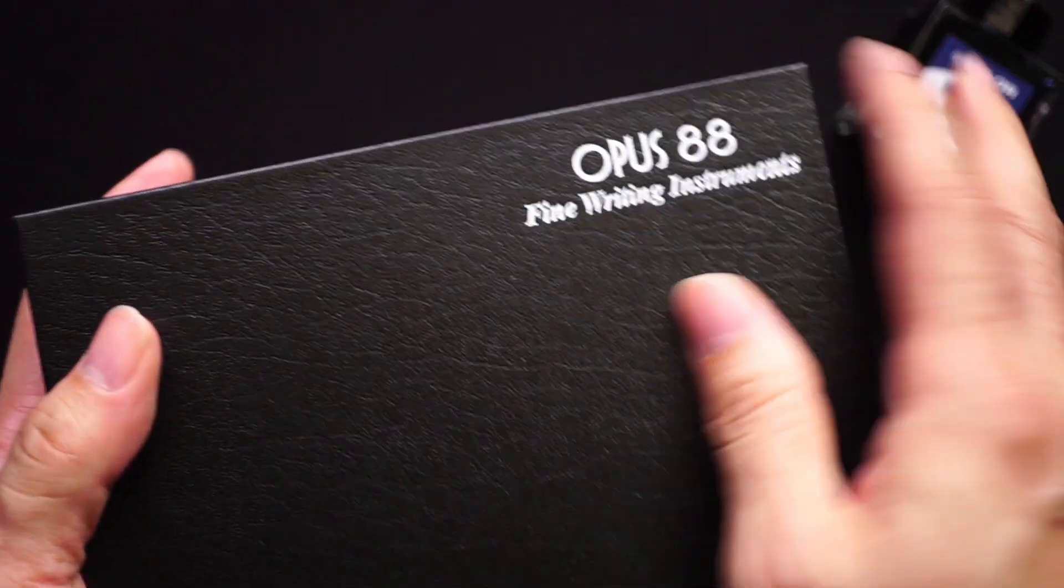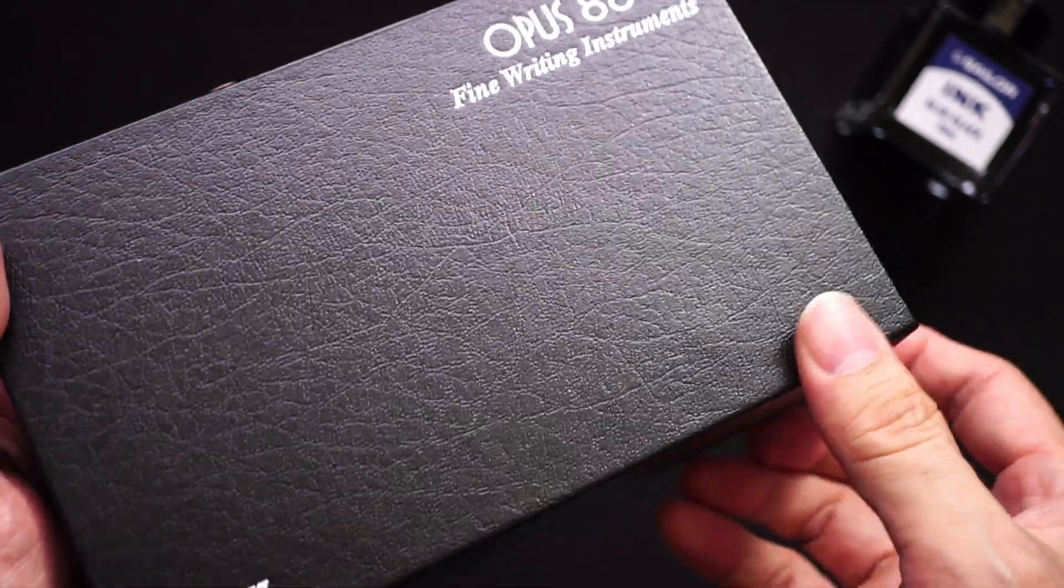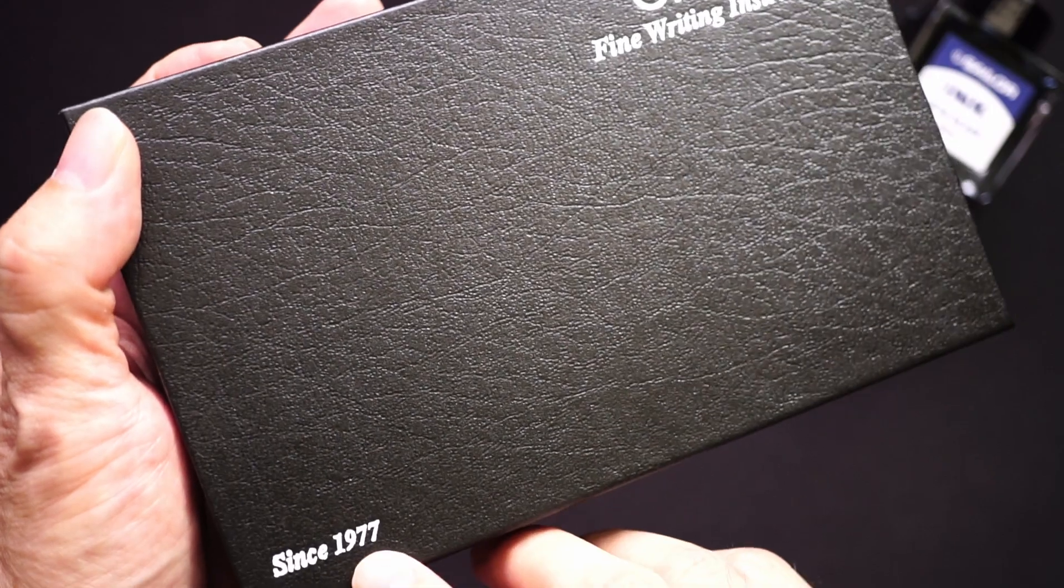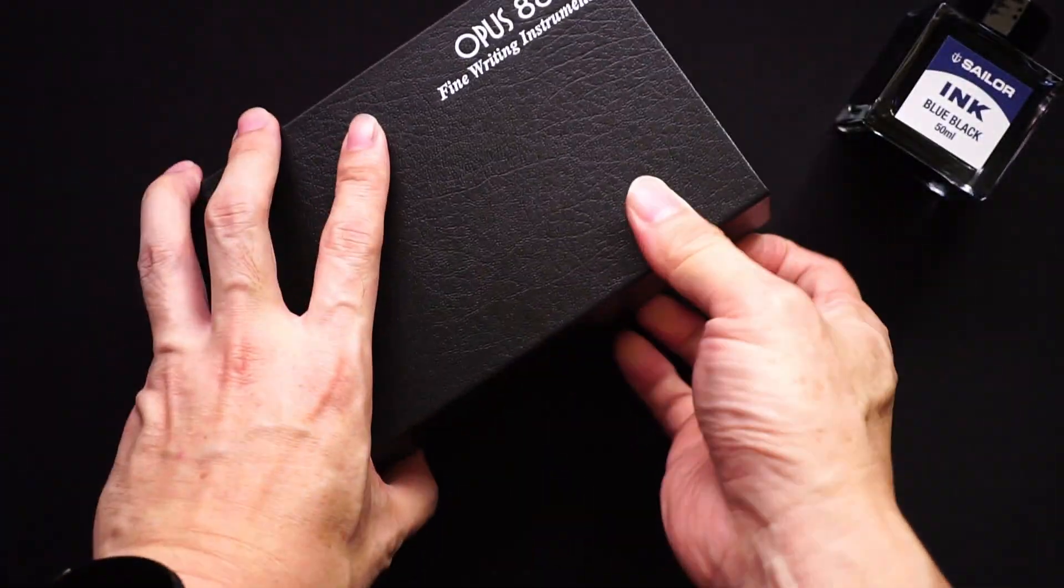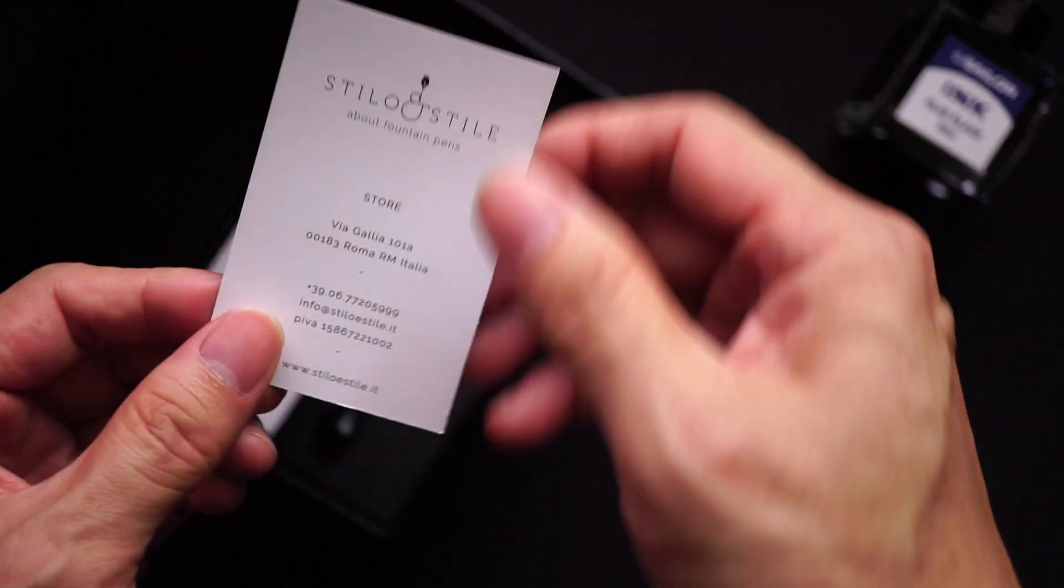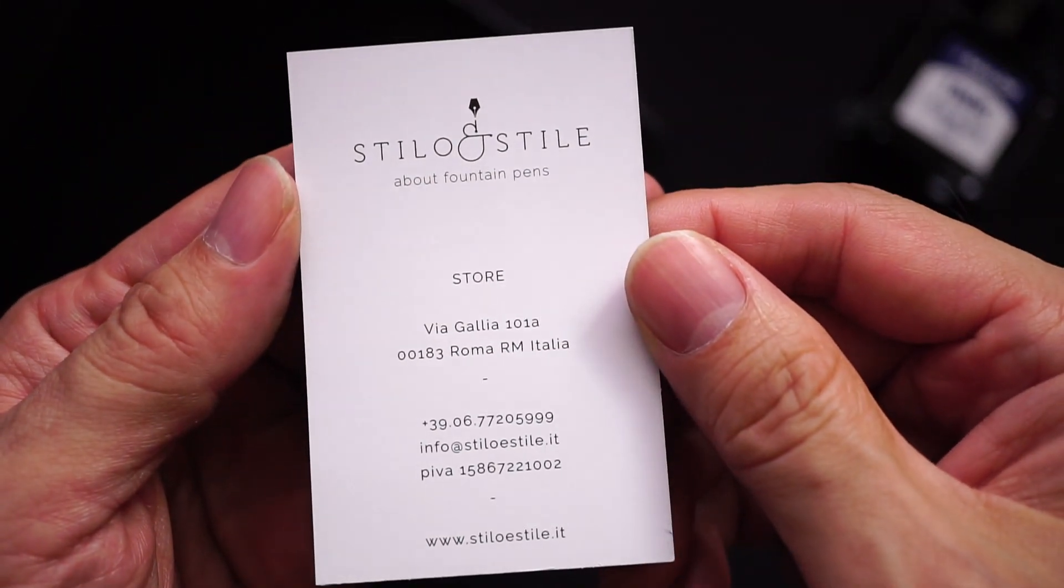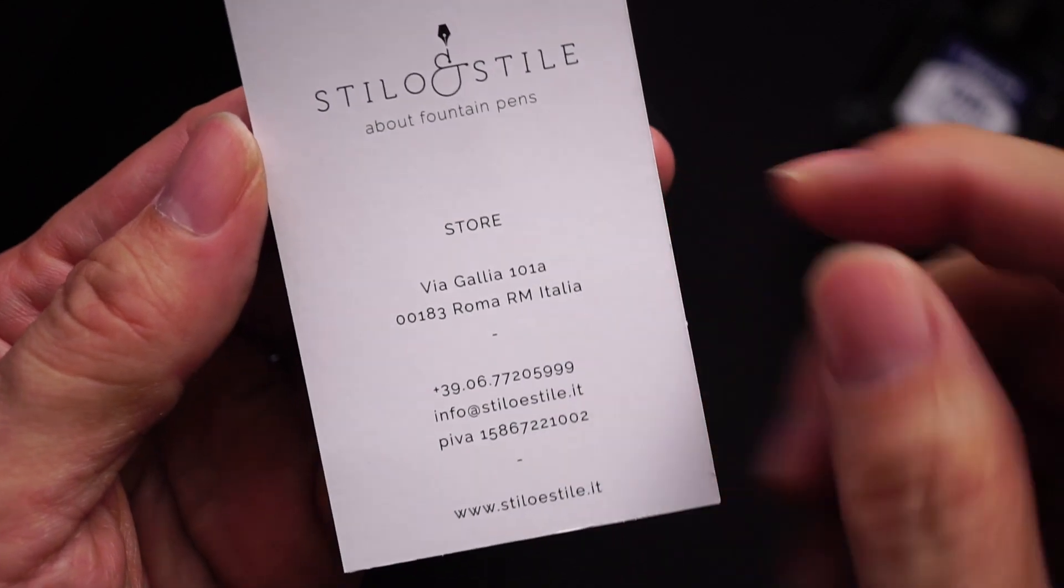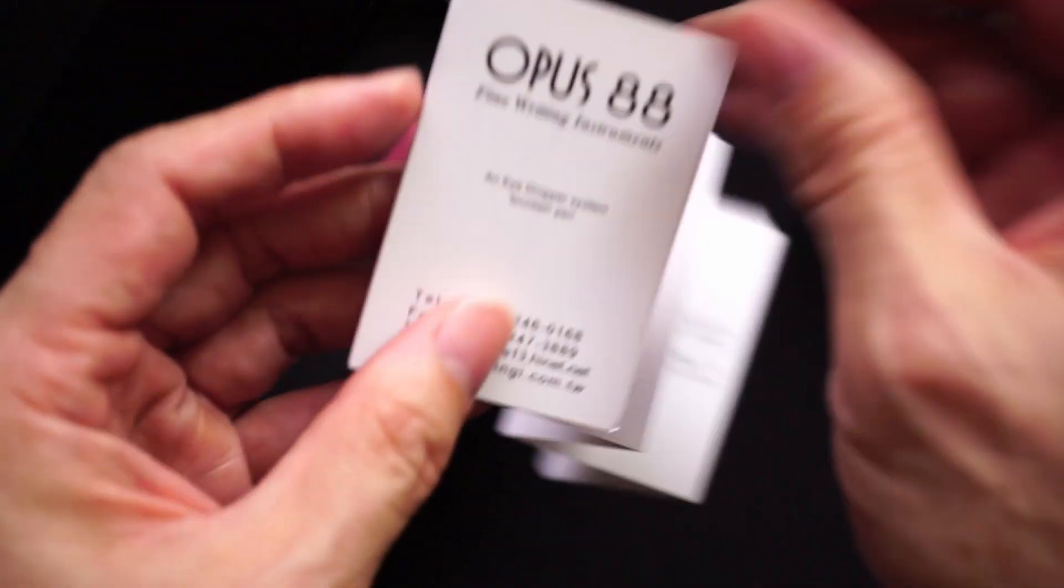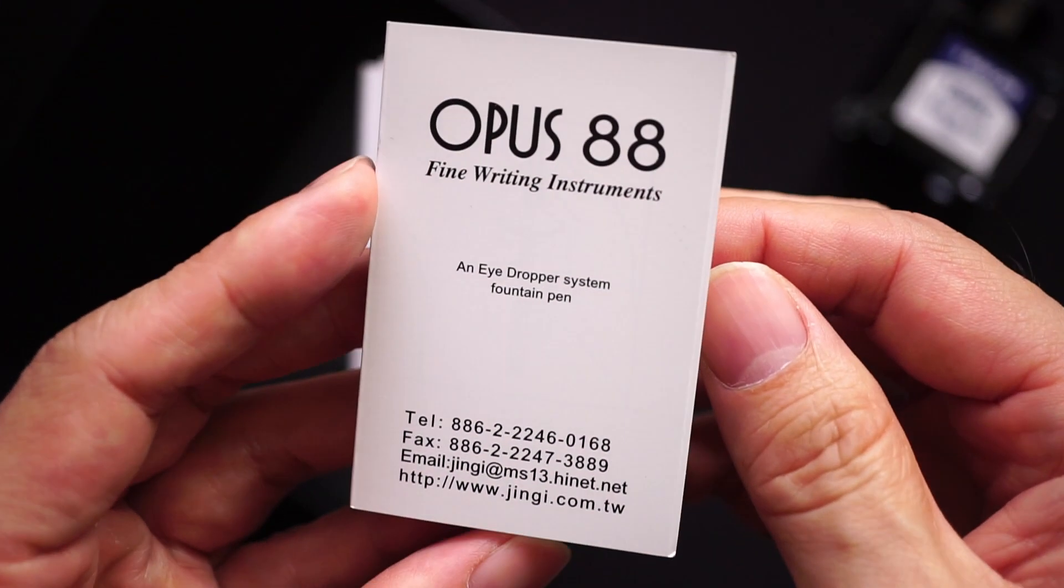Inside the cardboard box you get an inner box. It says that Opus 88 has been around since 1977. Opening up the box you get the card with the Stilo E-Stile branding, that's where the shop is if you happen to be in Rome, and you get the Opus 88 instruction guide.